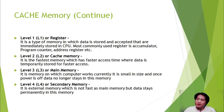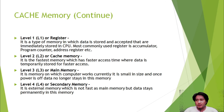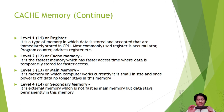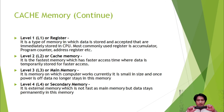Cache memory has four different levels. Level 1 cache memory is the type of memory in which data is stored and accepted immediately within the central processing unit. The most commonly used registers are the accumulator, program counter, and address register. The L1 cache is found inside the CPU itself — integrated directly into the central processing unit.